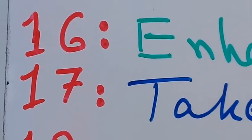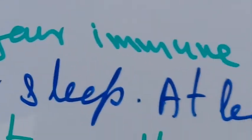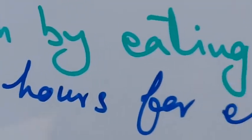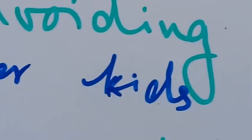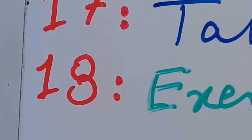Number 17, take a healthy nap or sleep at least 6 hours for elderly people and 8 hours for kids.